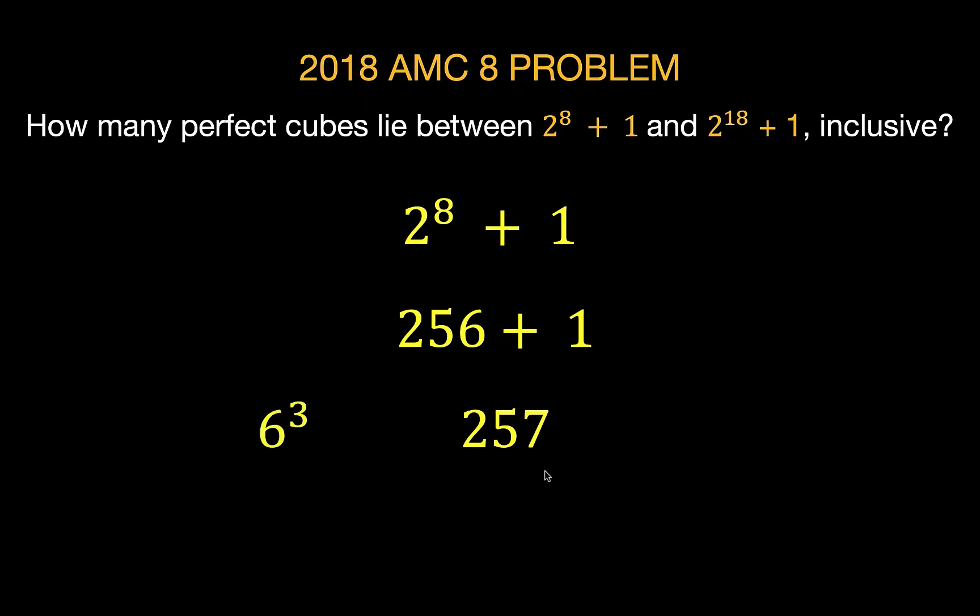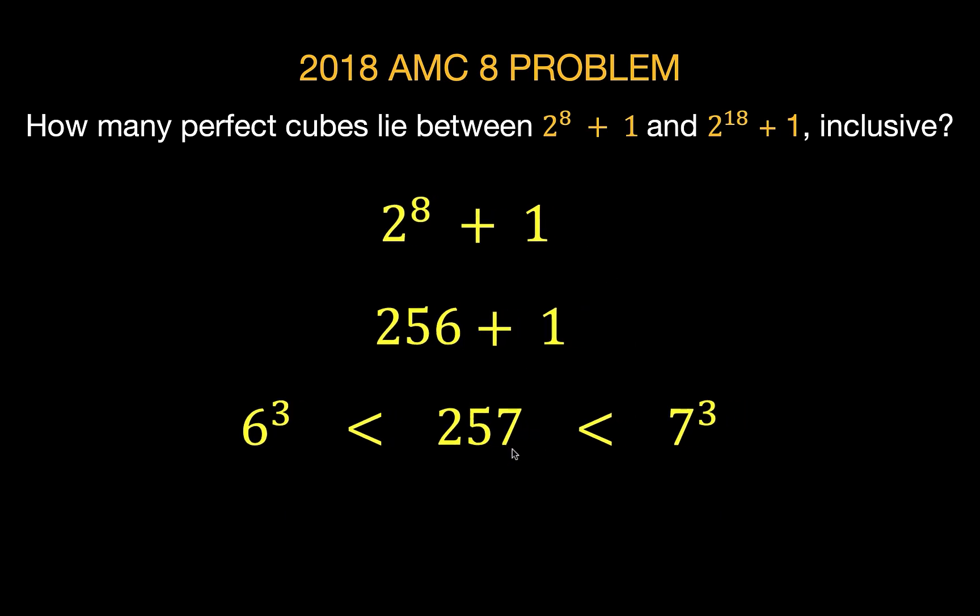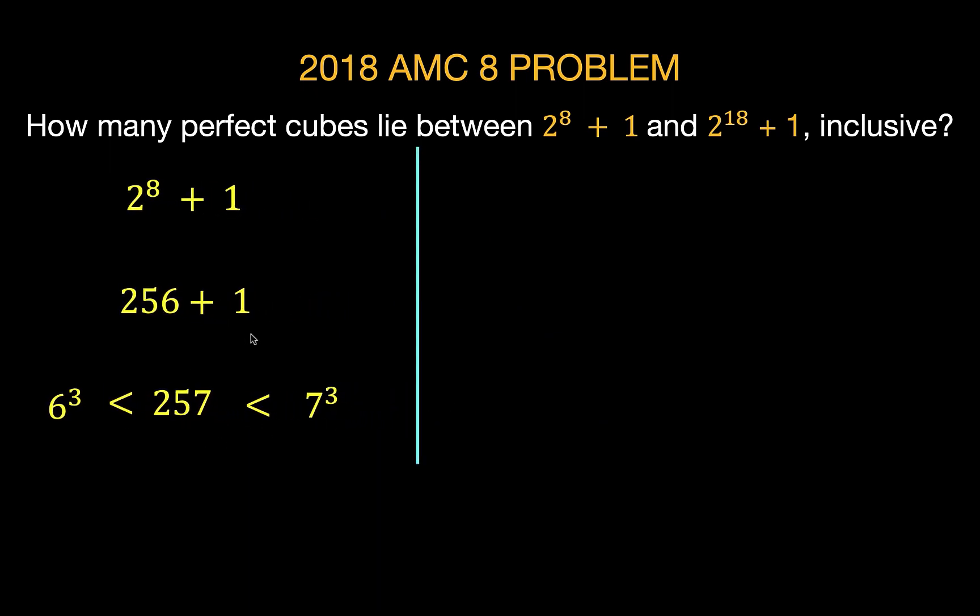Now let's look at what are the perfect cubes that are close to 257. Notice that 6 to the 3rd is equal to 216, and 7 to the 3rd is equal to 343. So clearly 257 is between 216 and 343. And so we now say that 6 cube is less than 257, which is also less than 7 cube. We are particularly interested with this 7 cube because this is the nearest perfect cube that is slightly greater than 257, which is our lower boundary. Now let's put this aside. We are going to go back to this later on.